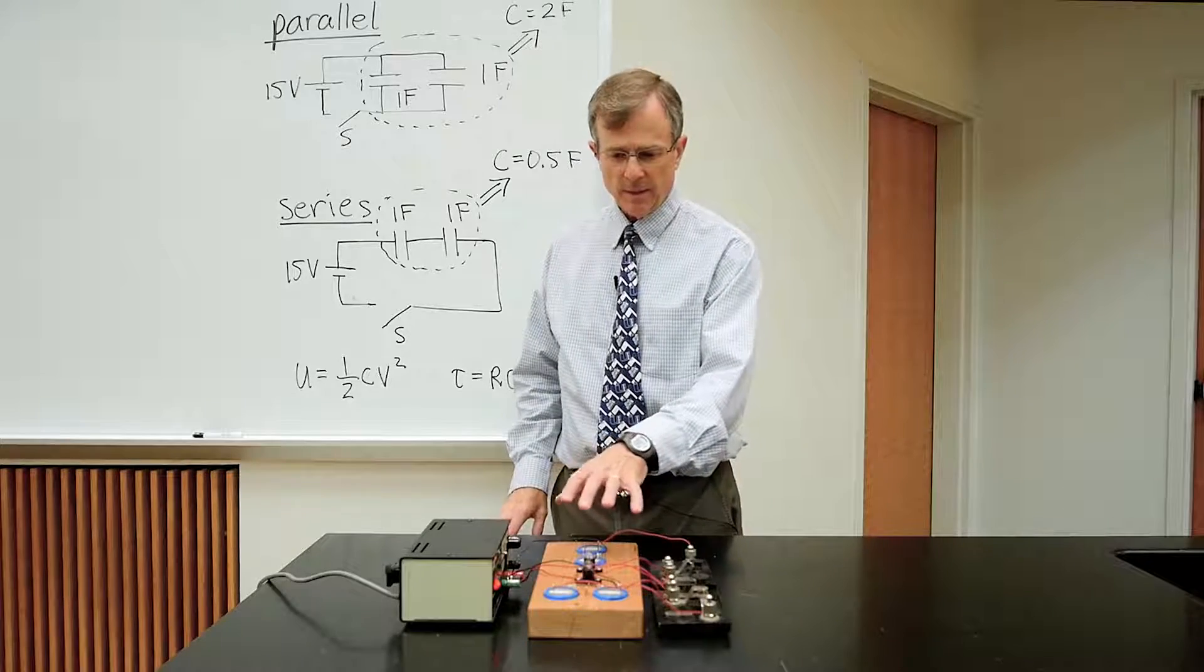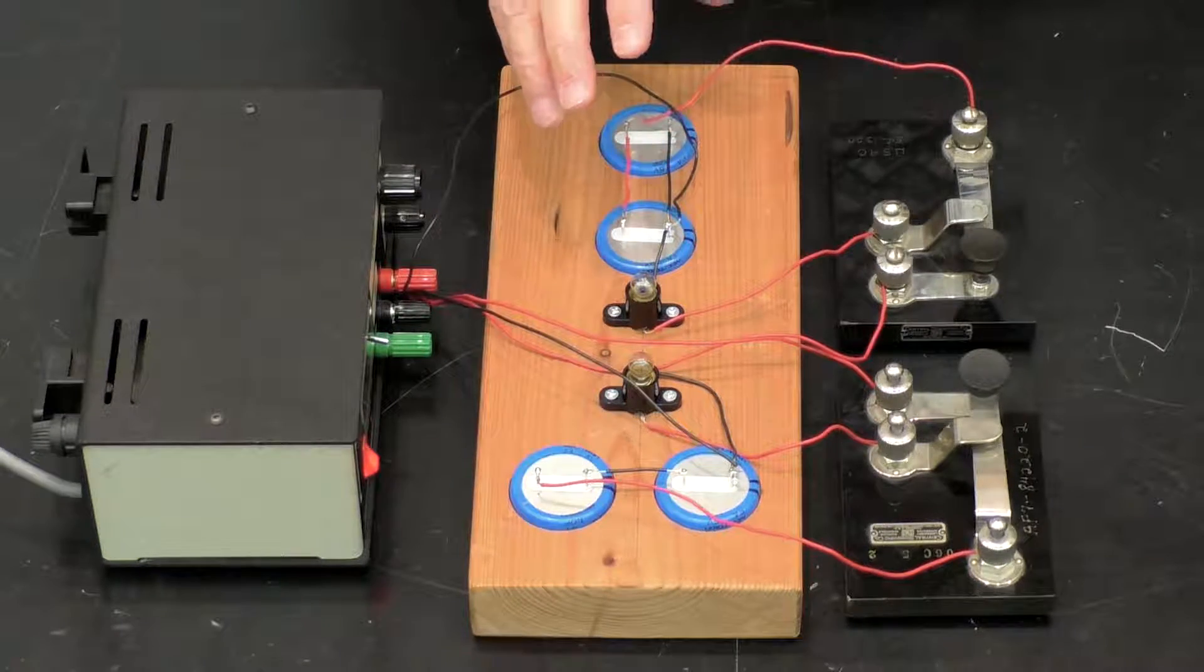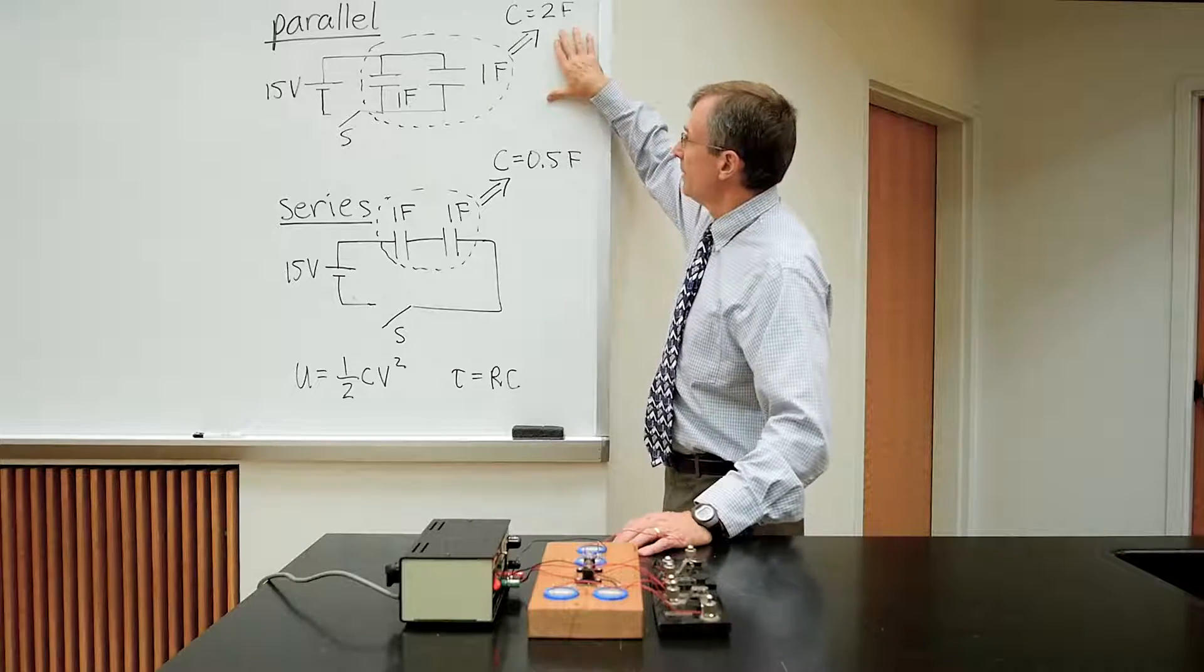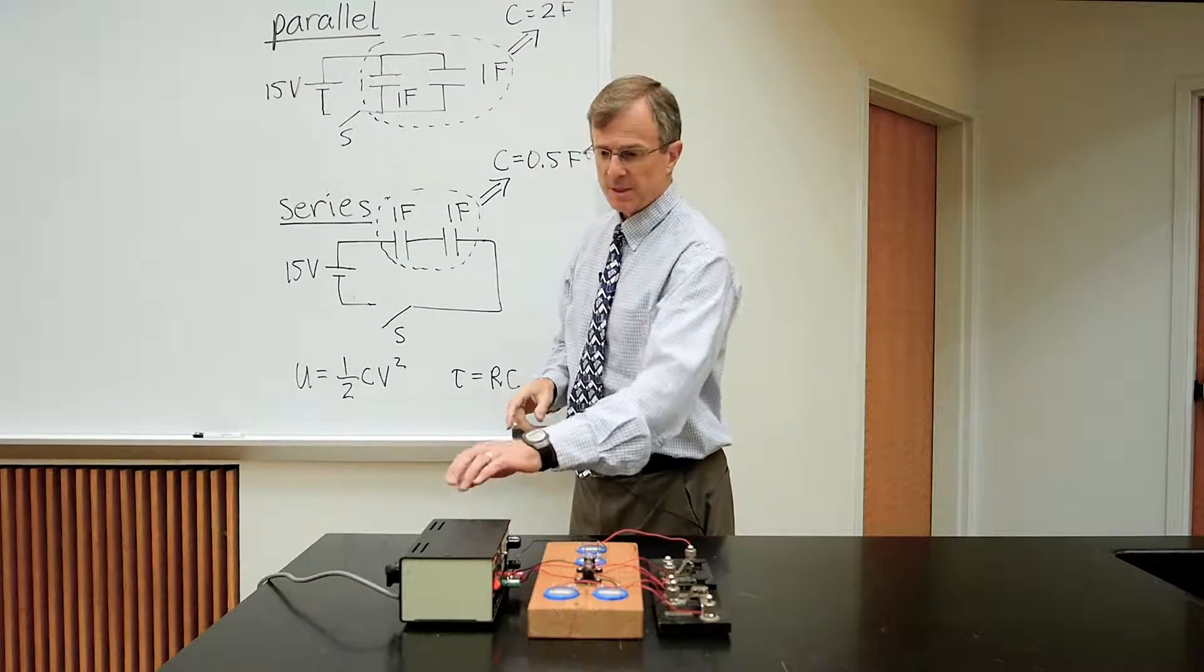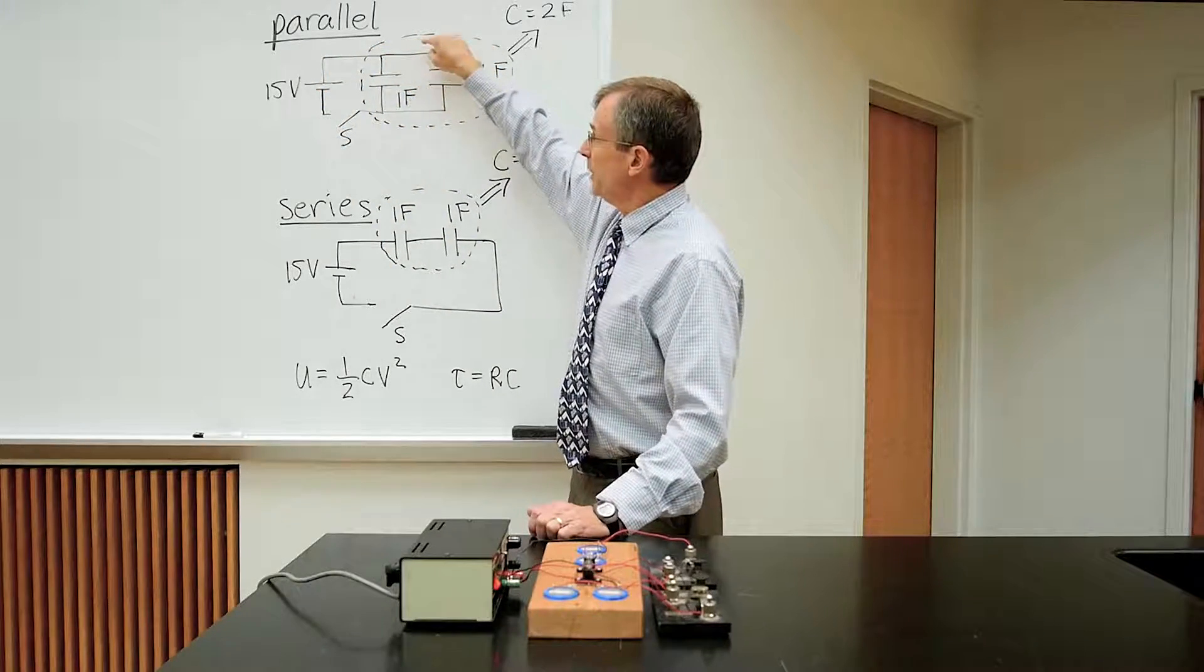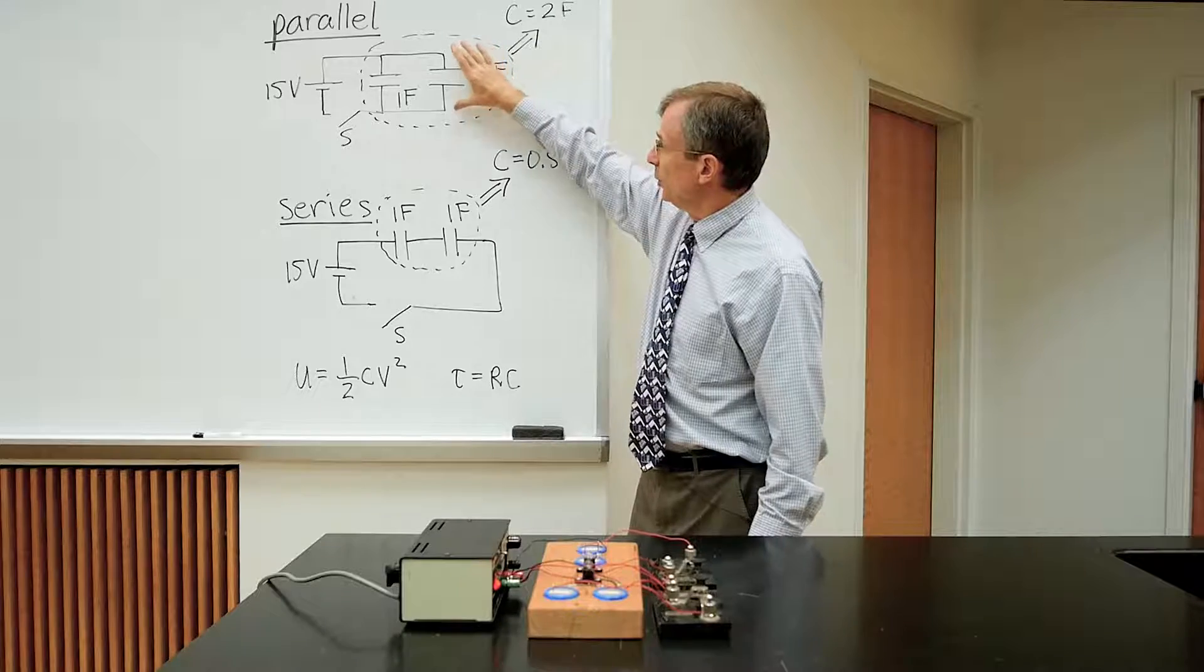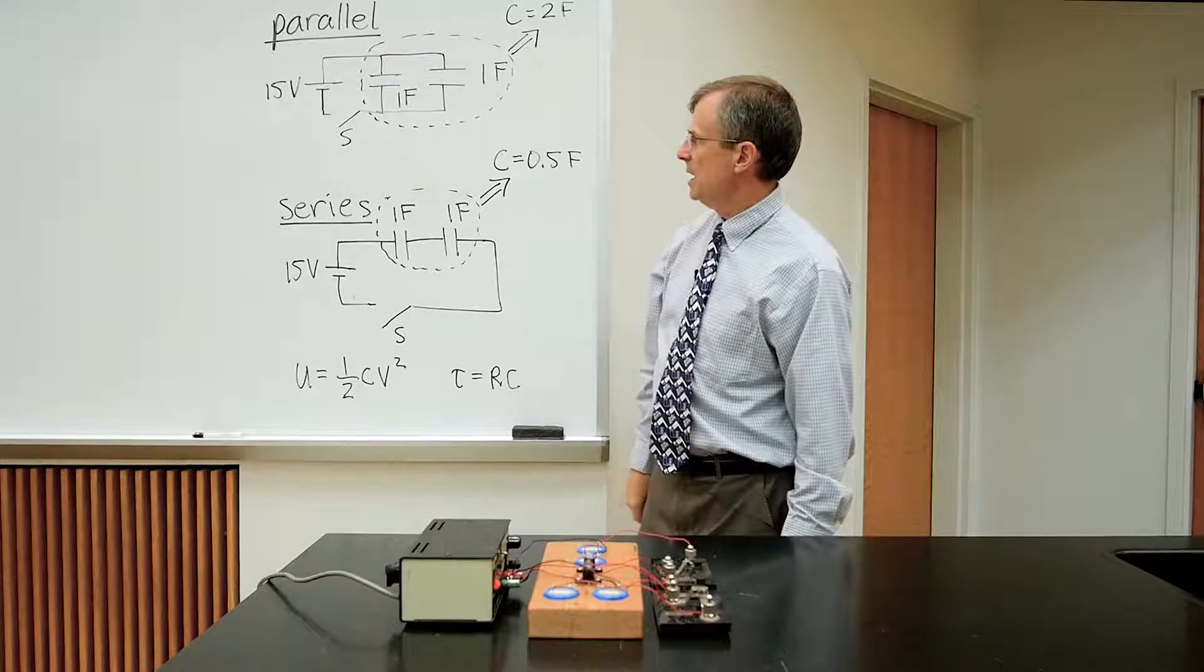I also have here a circuit in which the two capacitors are in parallel. So the effective configuration is up here, that the voltage source, which is this guy right here, passes and splits into two pieces. One that goes through the first capacitor, and one that goes through the second capacitor. So the voltages across these two capacitors are going to be the same at all times.